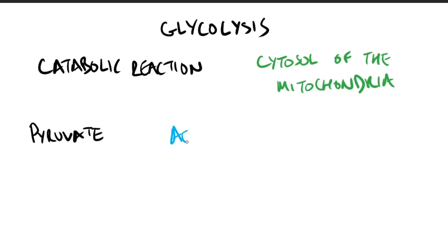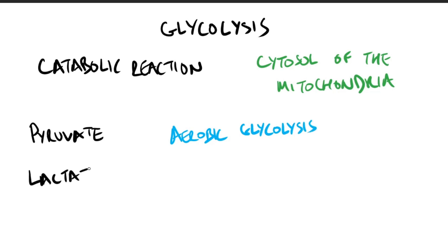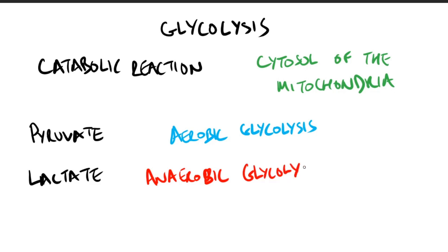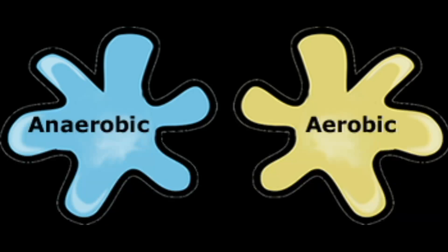Pyruvate is the end product of glycolysis in cells with mitochondria and an adequate supply of oxygen. So in aerobic glycolysis, pyruvate is the end product, and in anaerobic glycolysis, pyruvate is reduced to lactate as NADH is oxidized to NAD+. This conversion of glucose to lactate is called anaerobic glycolysis.